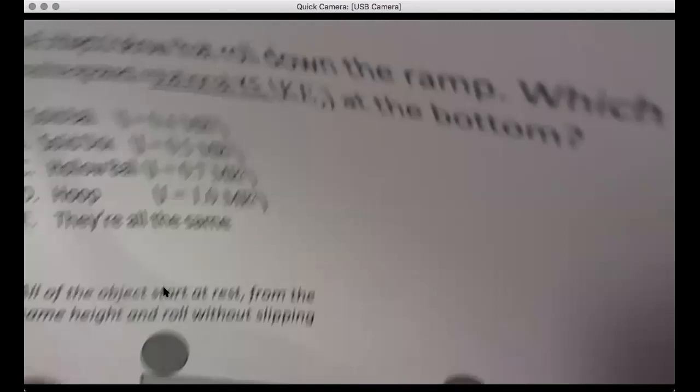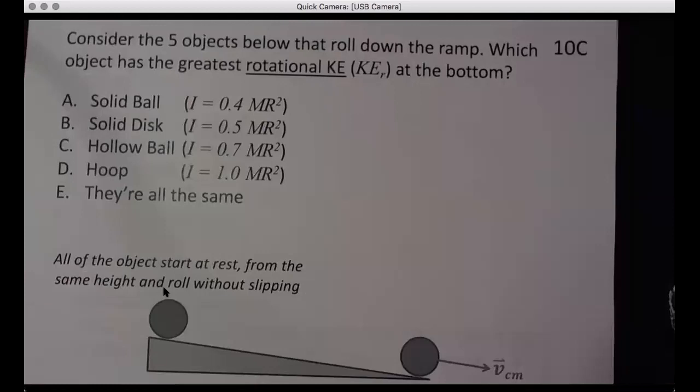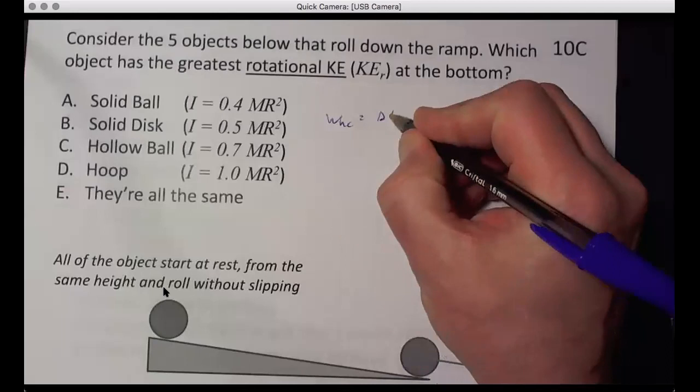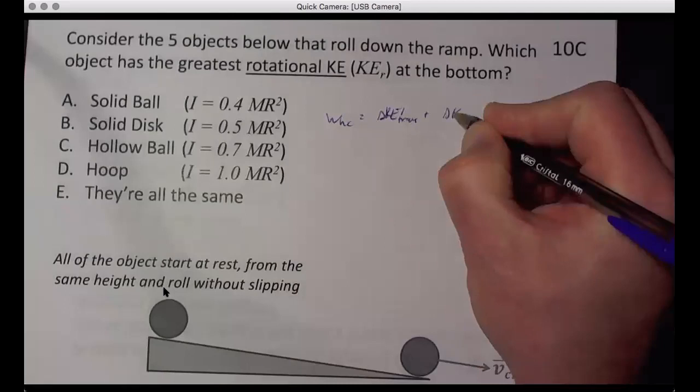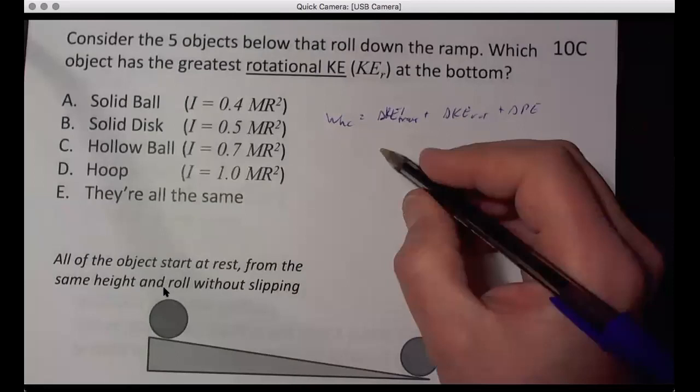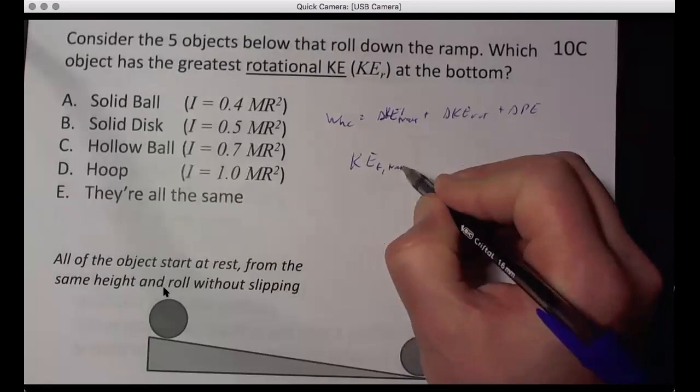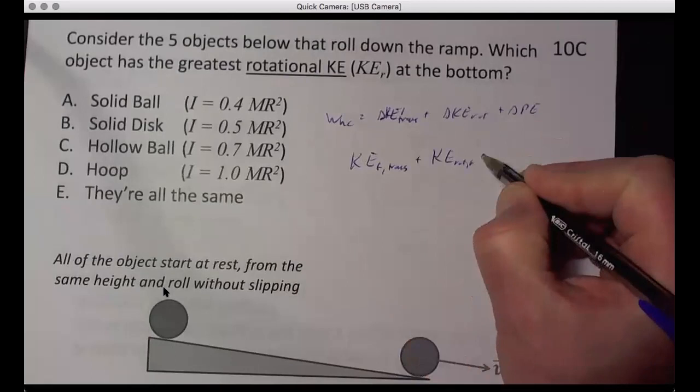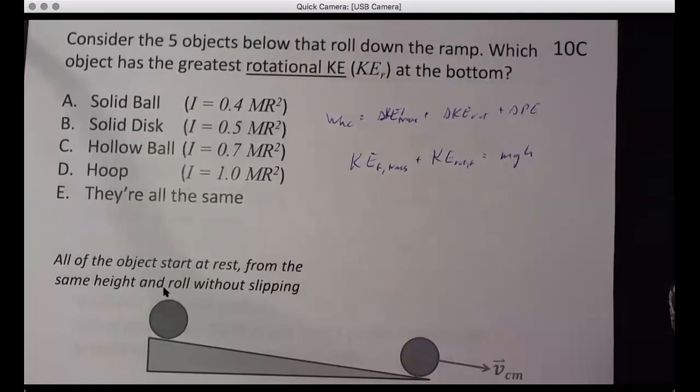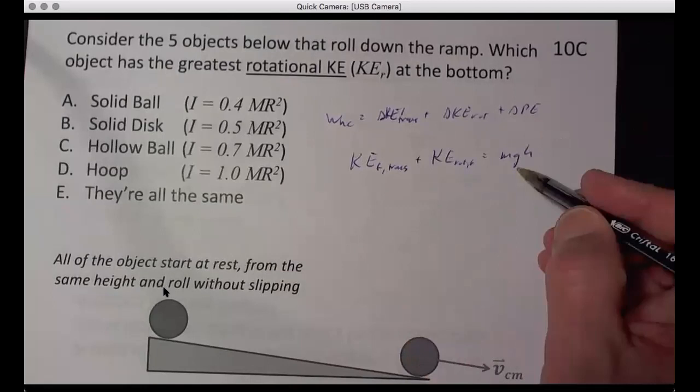And so let's ask additional. Let's ask which has the greatest rotational kinetic energy at the bottom. And so again, we do the same breakup as we did before. Work non-conserving is delta KE translation plus delta KE rotation plus delta PE. And you end up being KE final translation plus KE rotation final equals MGH.